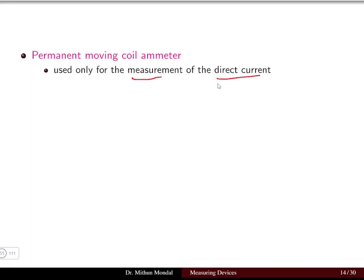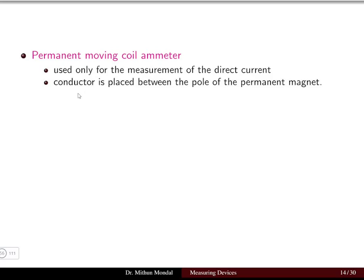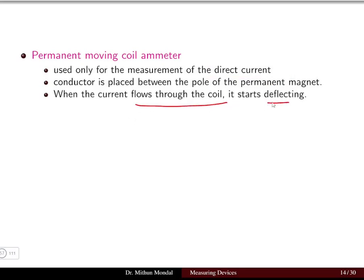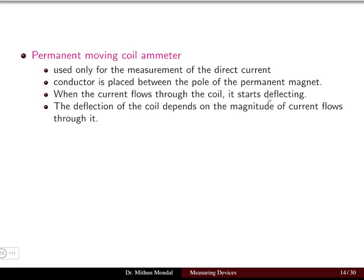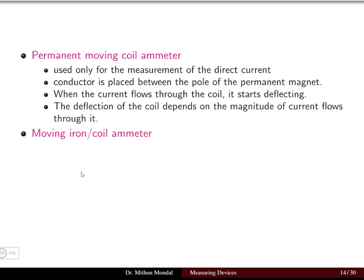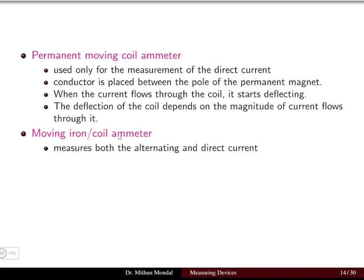The Permanent Magnet Moving Coil (PMMC) ammeter is used for measurement of DC current only. A conductor is placed between the poles of a permanent magnet, following the d'Arsonval movement principle discussed earlier with ohmmeters. When current flows through the coil, it starts deflecting due to the d'Arsonval movement, and the deflection of the coil depends on the magnitude of the current flowing through it. This deflection is used to measure the direct current.